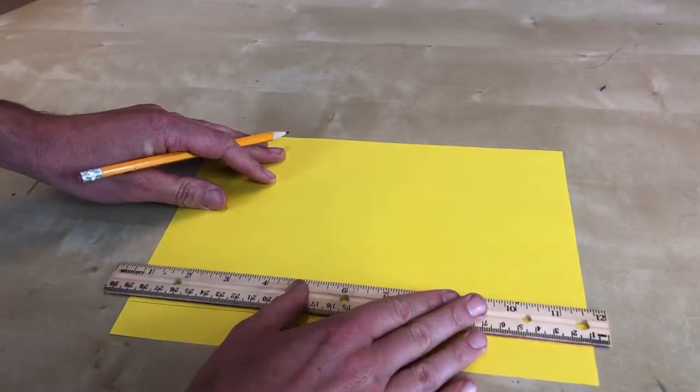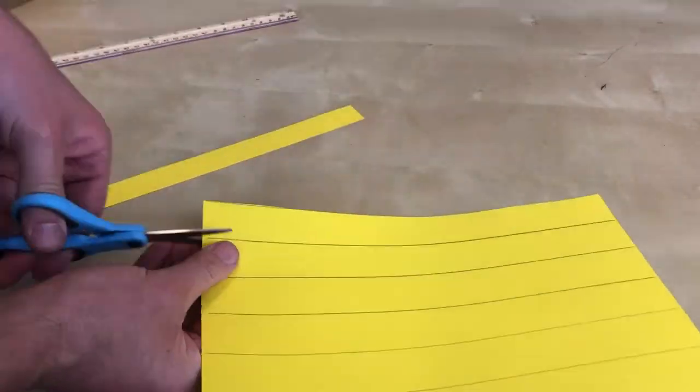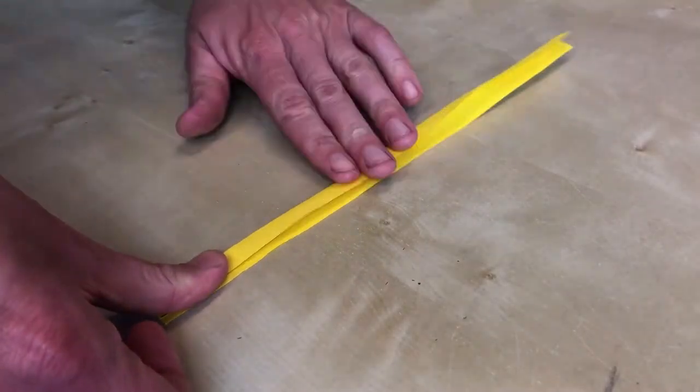Divide a sheet of paper into one inch strips. Most rulers are around one inch wide so you can use that as a guide. Cut the strips of paper and then fold them in half lengthwise. Press hard to create a solid crease.